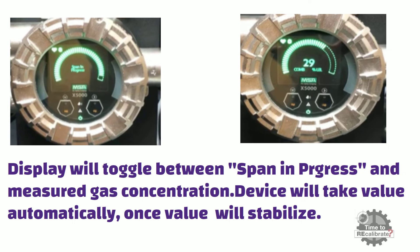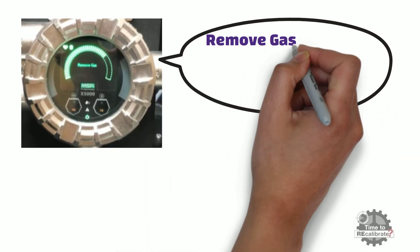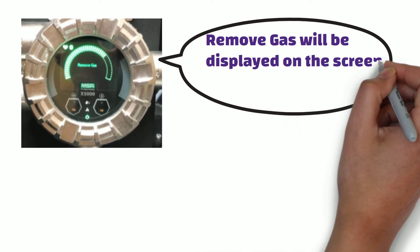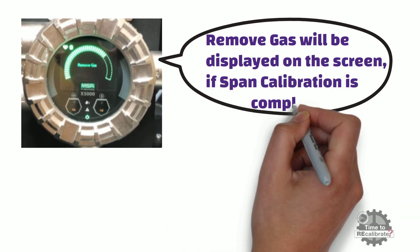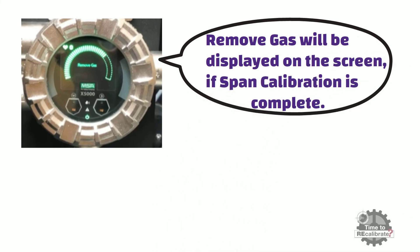At this point, be patient and wait till the value stabilizes. As you can see from the picture, remove gas will be displayed on the screen if span calibration is complete. So, turn off the gas flow and remove the Tygon tube from the sensor at this time.